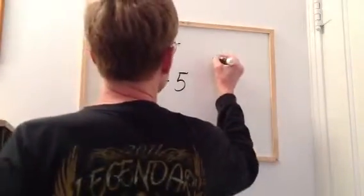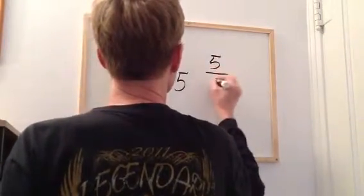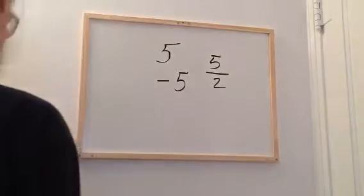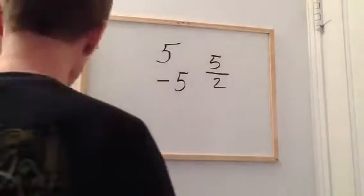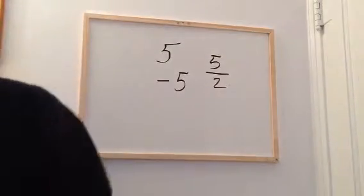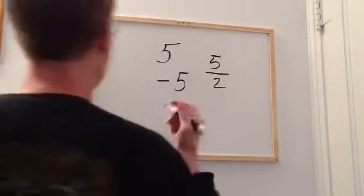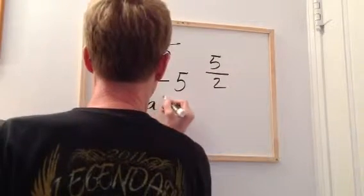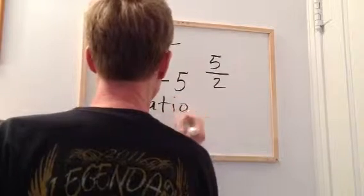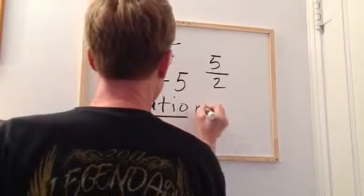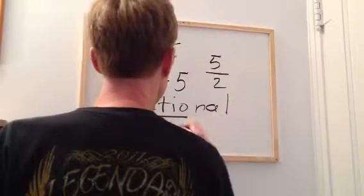Then we have quantities like five divided by two or five halves. Those are rational numbers. Any ratio of two integers is called a rational number.